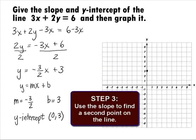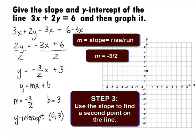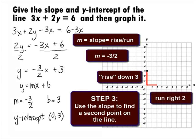In Step 3, we use the slope to find the second point on the line. The slope is rise over run. Since we have a negative slope, the rise and the run have to be opposites of each other. One has to be positive and one has to be negative. So we can either go down 3 and run right 2, or rise up 3 and run left 2. Let's go ahead and go down 3 and run right 2. This gives us a second point of (2, 0).